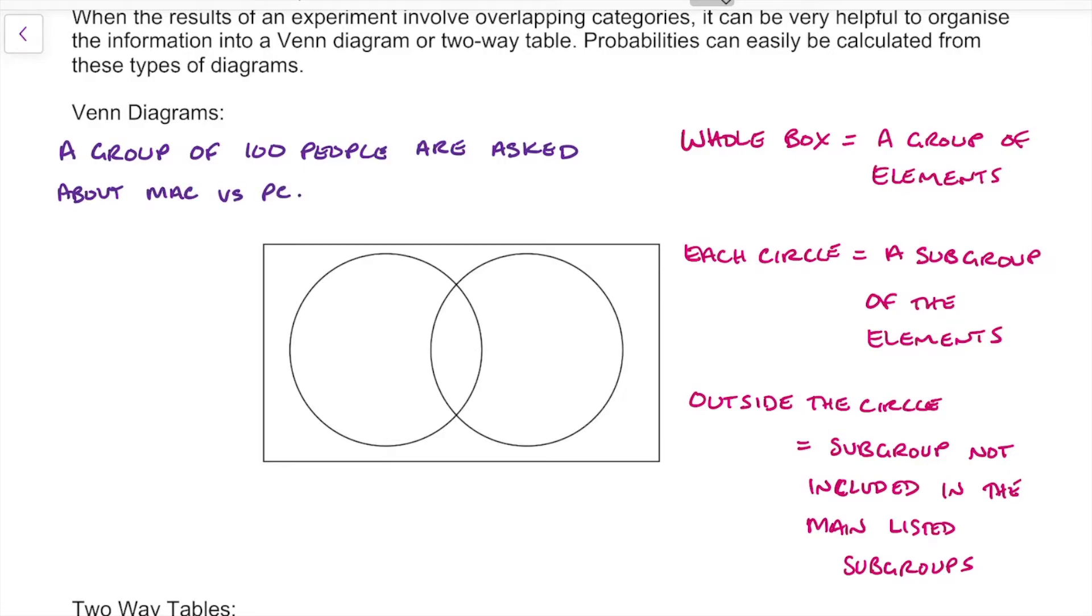So here we're going to survey 100 people, we're going to ask them if they like Mac computers versus PCs, and this Venn diagram represents the results.